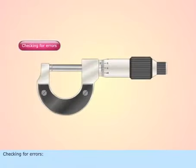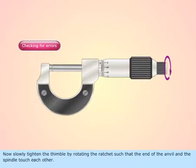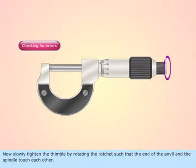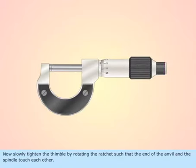Checking for errors. Now, slowly tighten the thimble by rotating the ratchet such that the end of the anvil and the spindle touch each other.